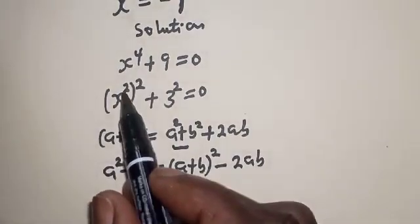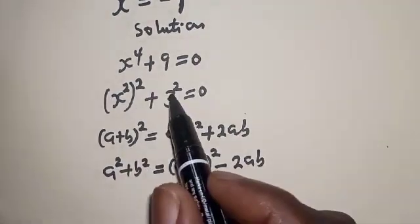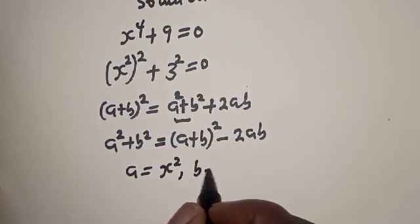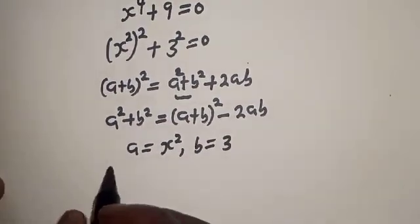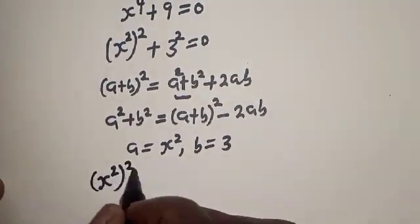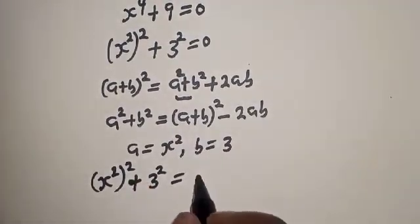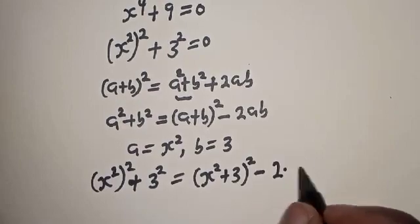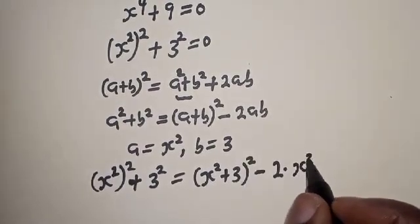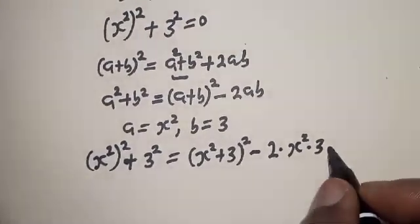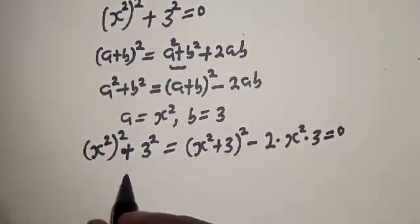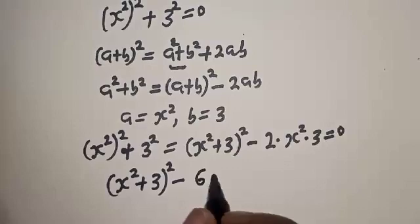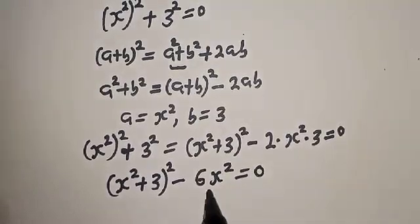Here a² corresponds to (x²)² and b² corresponds to 3², so a is equal to x² and b is equal to 3. Therefore (x²)² + 3² equals (x² + 3)² minus 2 multiplied by x² multiplied by 3, everything equal to zero. So this is (x² + 3)² minus 6x² is equal to zero.